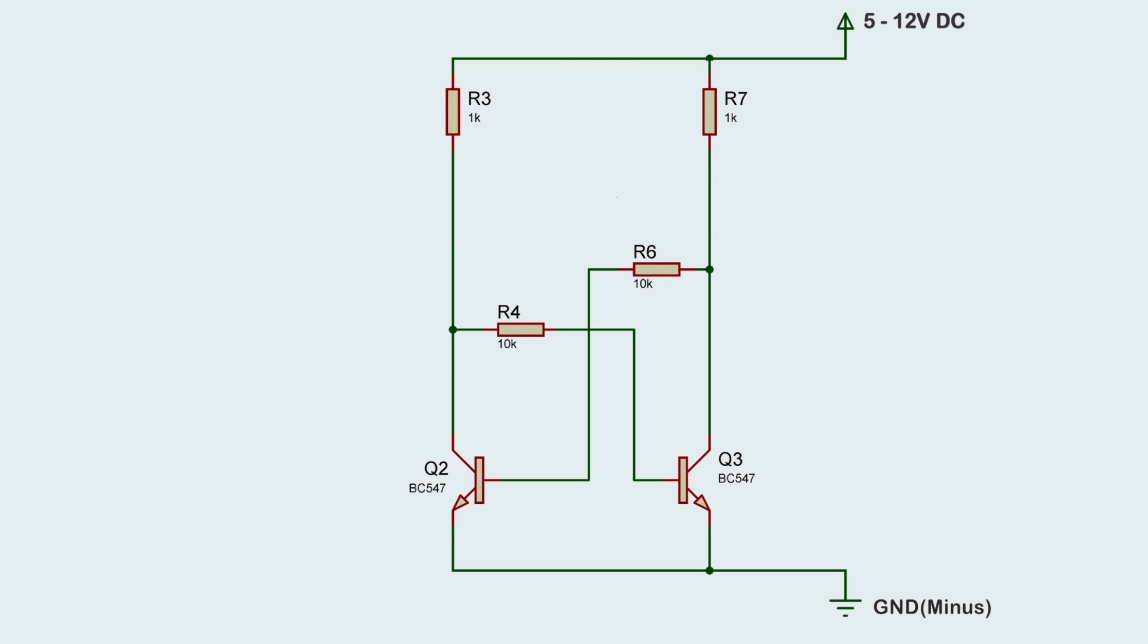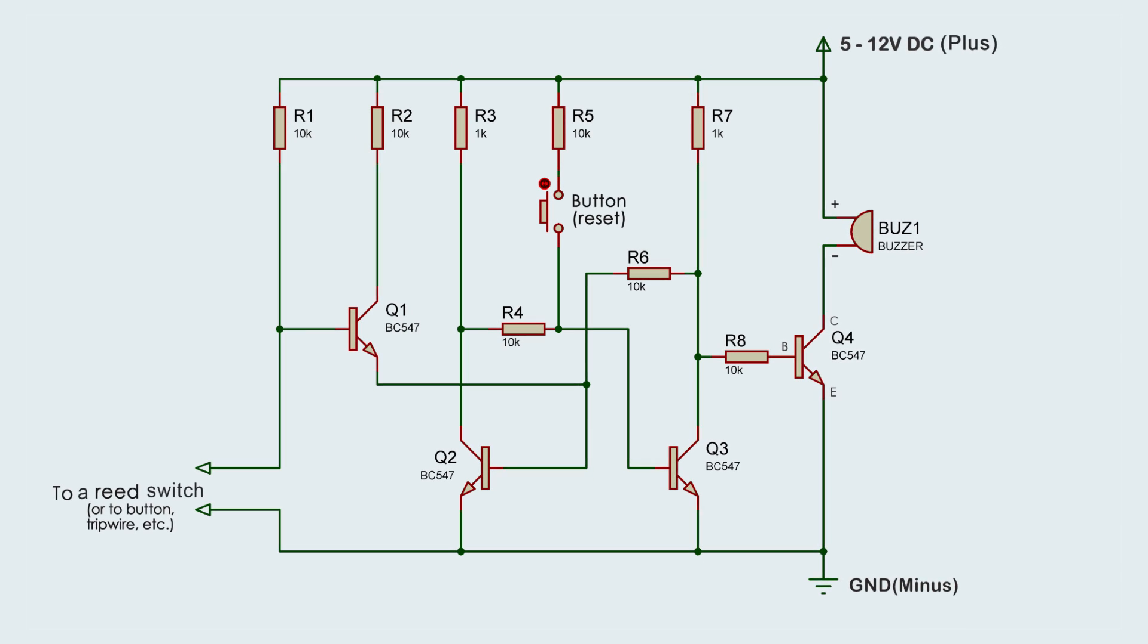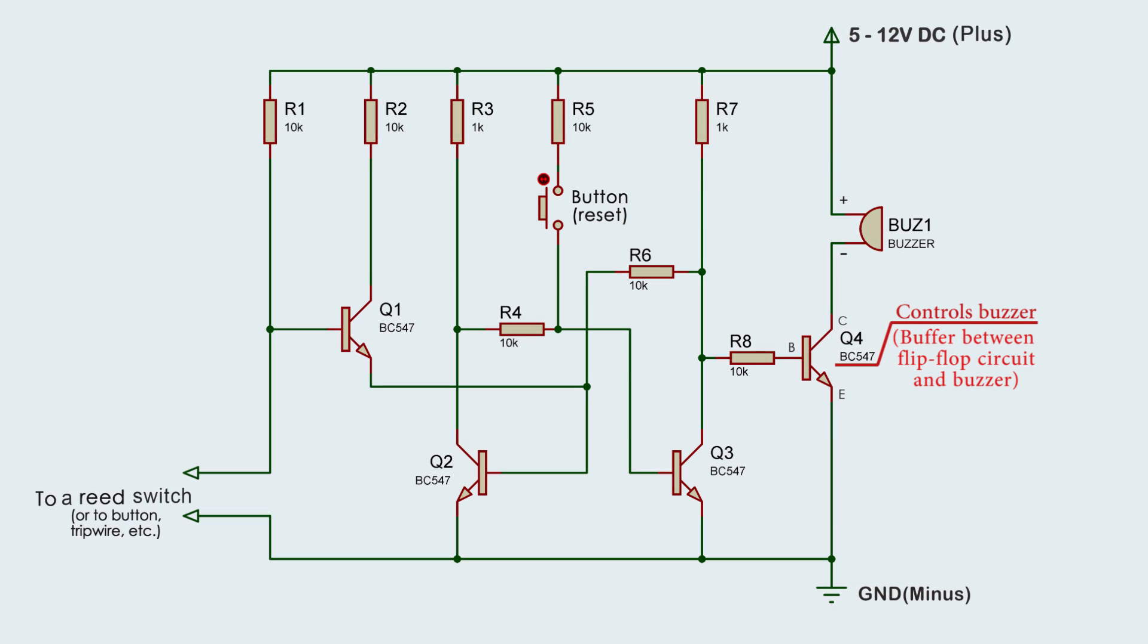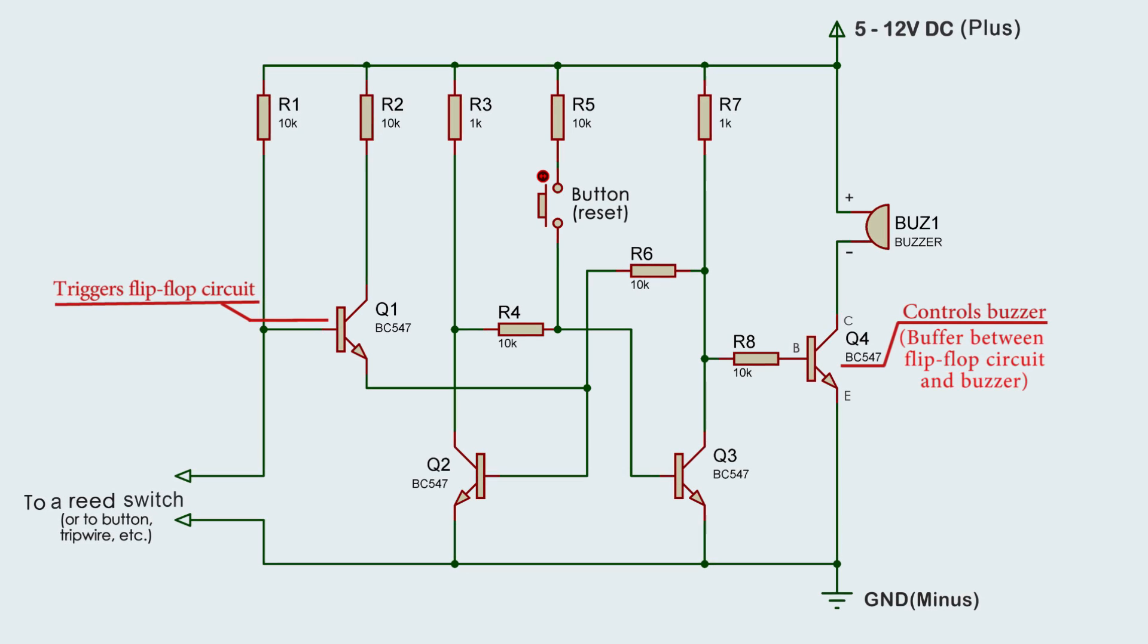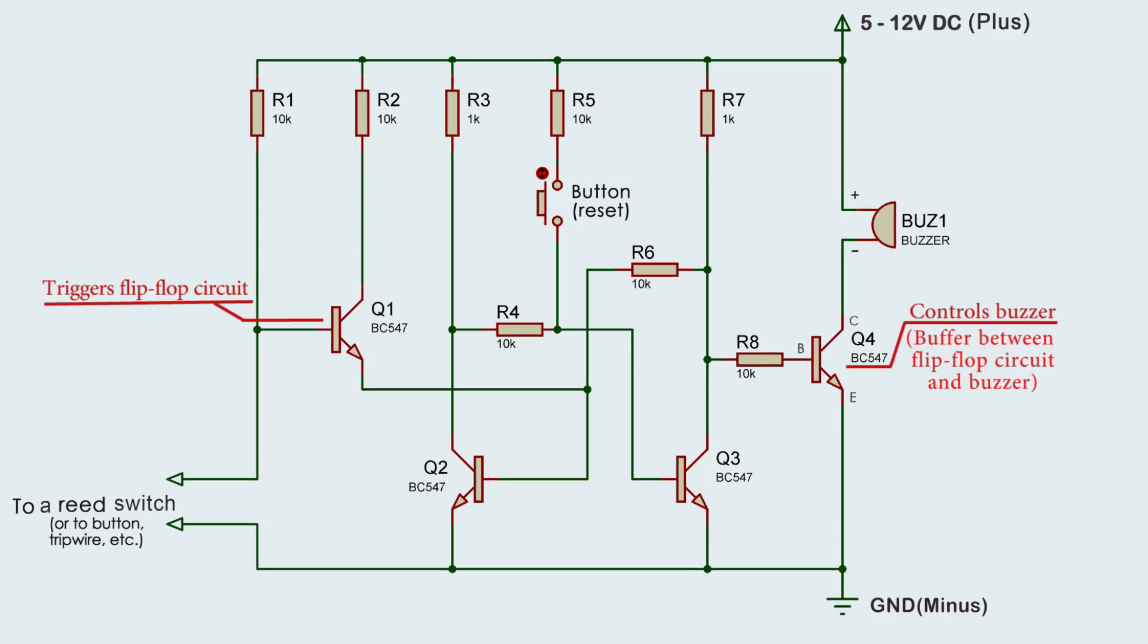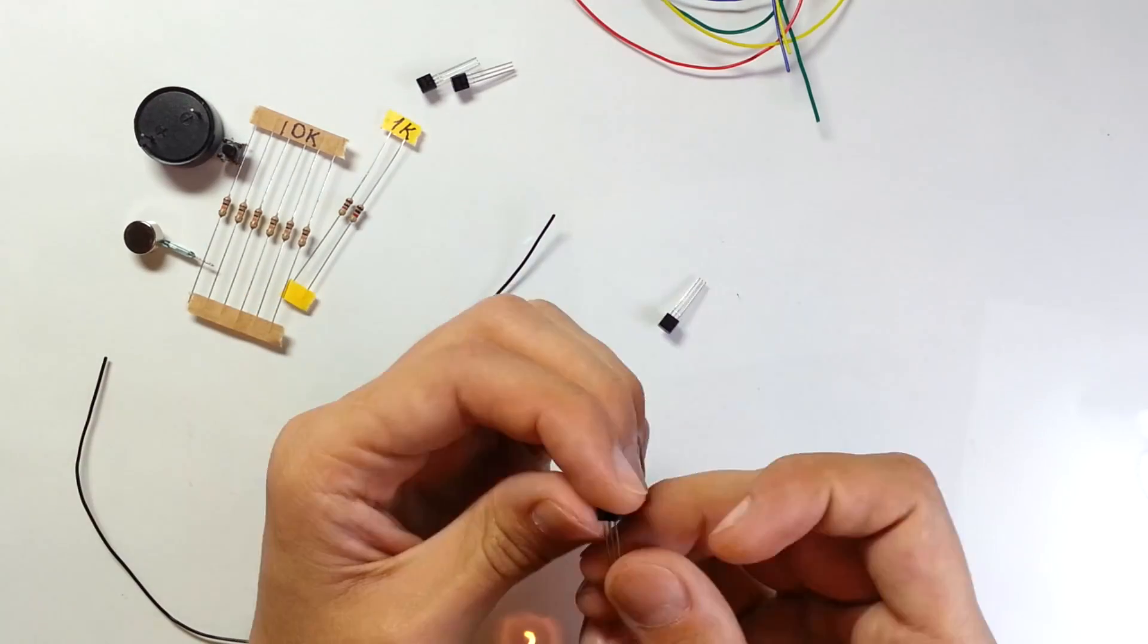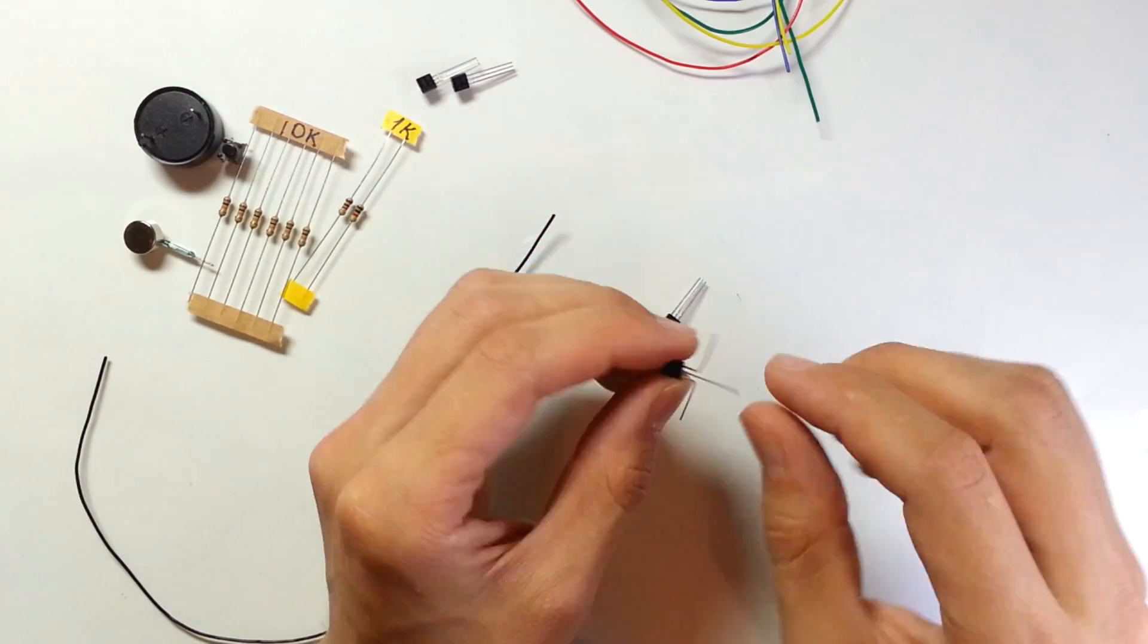On the right side you can see transistor Q4. It controls the active buzzer and works like a buffer between flip-flop circuit and load. Transistor Q1 on the left will trigger the flip-flop circuit. To make soldering and troubleshooting easier, at first I'm going to build only a part of this circuit and test it.